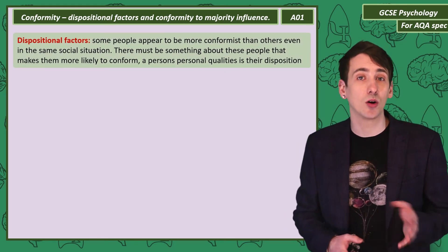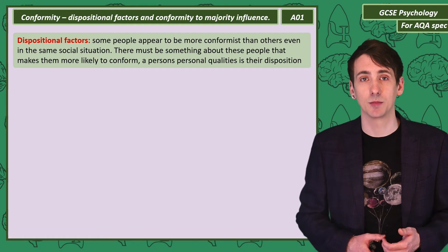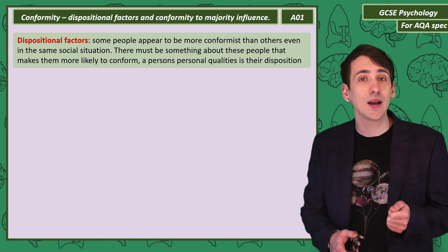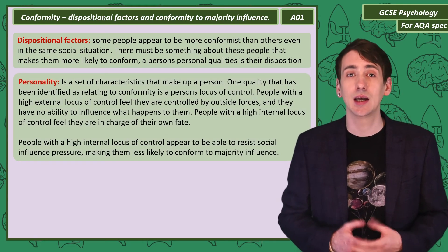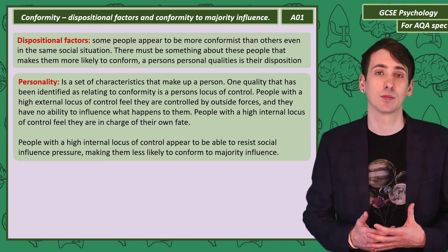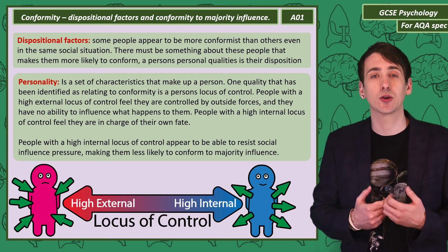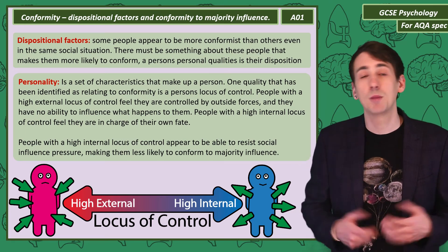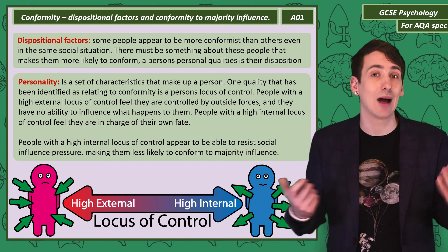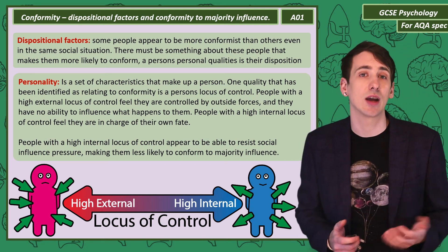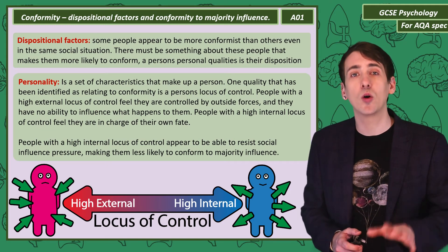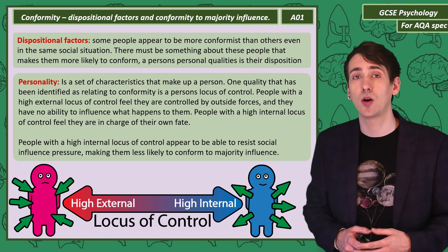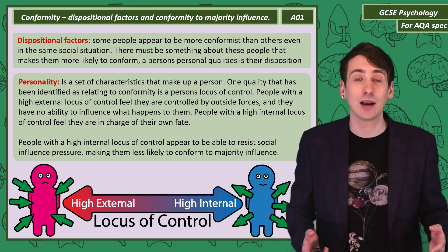We notice that some people are more conformist than others in the same social situation — it could be their personality, their set of personal characteristics. One aspect of personality linked to conformity is a person's locus of control — where you feel the power to control your life comes from, inside or outside yourself. People with an external locus of control feel controlled by outside forces and are thought to be more conformist. People with an internal locus of control feel they are in control of their own fate and can resist social pressure.